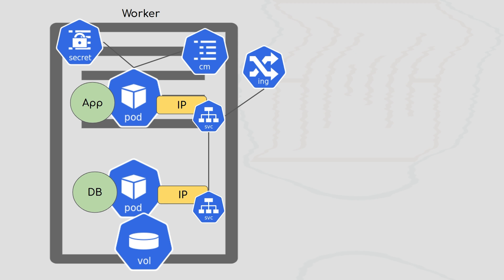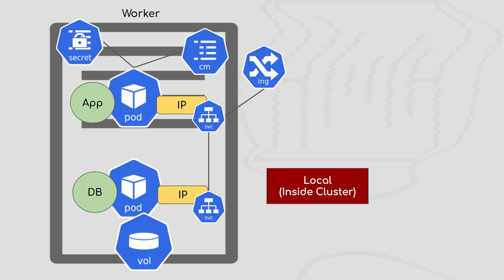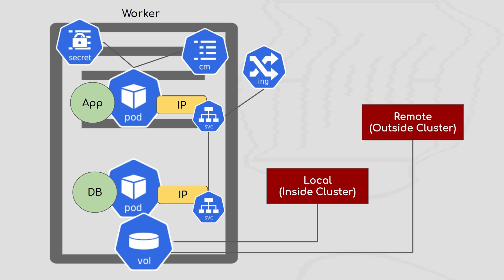Volumes are essentially external storage — hard drives or any storage provided locally, on-premise, or by your cloud provider. There are two types: you can create volumes locally inside the Kubernetes cluster, or create a remote volume with any cloud provider and attach that storage to your Kubernetes cluster.